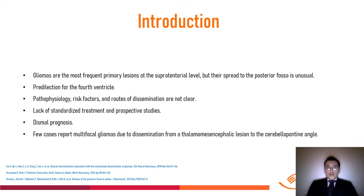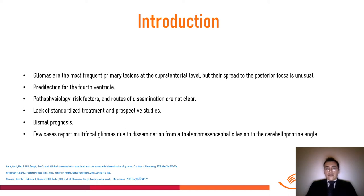Gliomas are the most frequent primary lesion at the supratentorial level, but their spread to the posterior fossa is unusual; however, there is some predilection for the fourth ventricle. Pathophysiology, risk factors, and routes of dissemination are not clear, so a lack of standardized treatments and prospective studies is evident. The prognosis is dismal, and few cases report multifocal gliomas due to dissemination from a thalamencephalic lesion to the cerebellopontine angle.